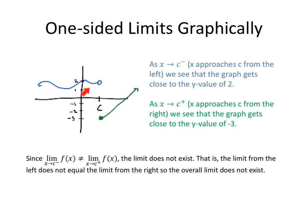Now we can see that the limit from the left, 2, and the limit from the right, negative 3, are not equal. This tells us that the limit does not exist as X approaches C for this particular graph.